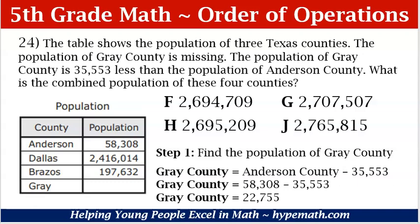Gray County is equal to Anderson County minus 35,553. We need to find the value of Anderson County. We look over at our table and we see that the population of Anderson County is 58,308. So we are going to substitute in that value. Since we have both of those values, we can subtract: 58,308 minus 35,553 is equal to 22,755. So the population for Gray County is 22,755.